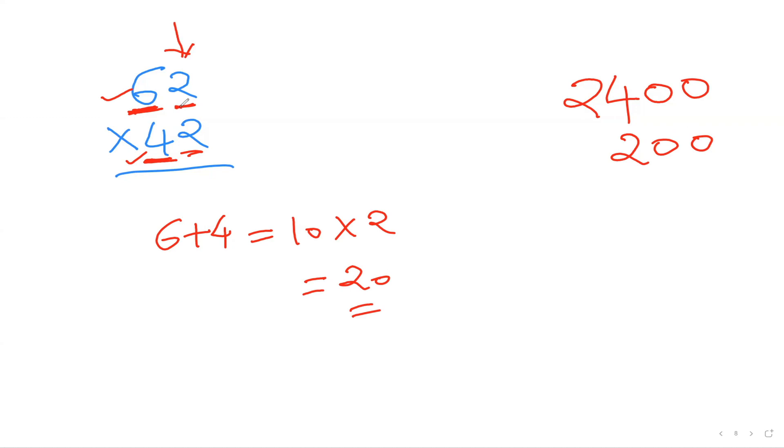And now the last digit here, two and two, you can multiply. Two times two is four. So you can add it. Now if you add up everything, that is going to be 2604, which is your answer guys.